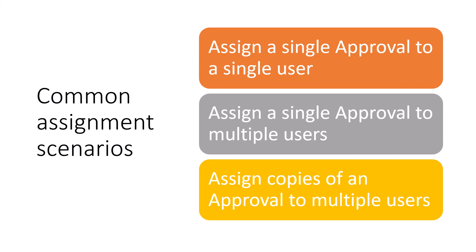The third option is a hybrid of the first two. Rather than a single approval going to multiple people, you assign a copy to each person individually — essentially it's like the single-approval scenario but you might have five approvers, so you're generating five separate copies. That will make more sense when we look at it in just a couple of minutes.